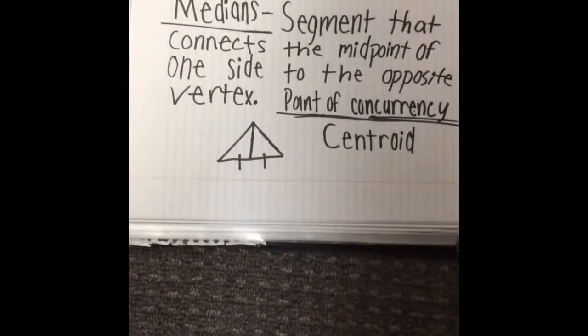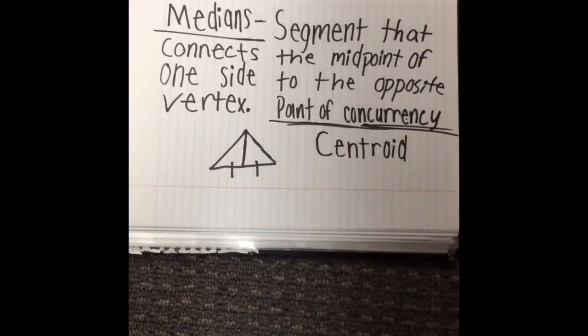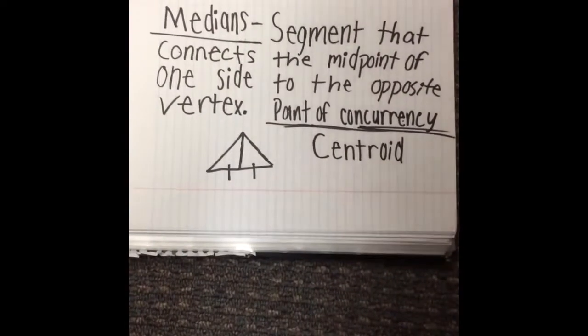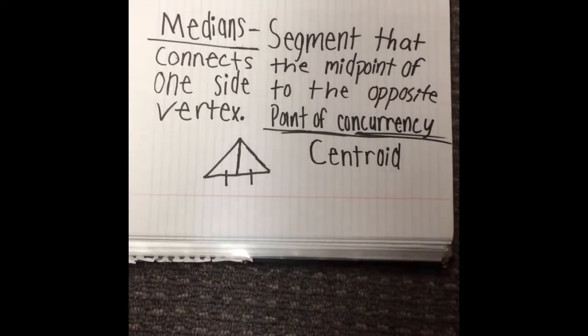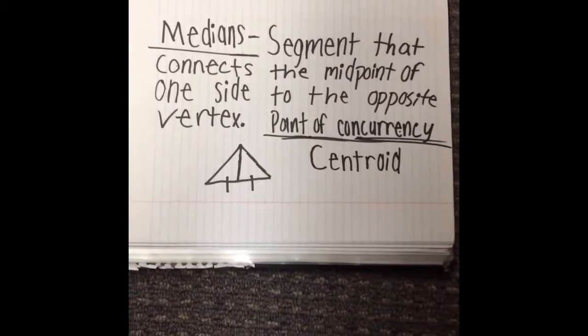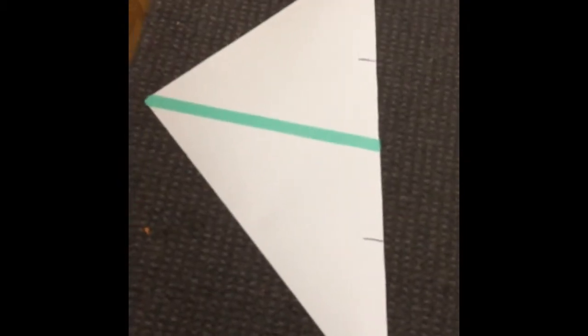Medians are the segment that connects the midpoint of one side to the opposite vertex. The median's point of concurrency is the centroid. The green line represents the median of this triangle. We know that this is the midpoint because the two tick marks on the one side of the triangle represent that the midpoint of that side is extending to the opposite vertex.